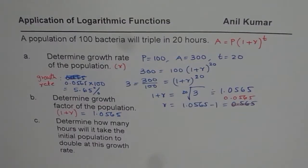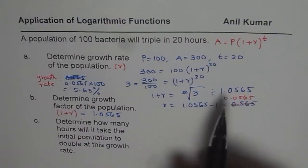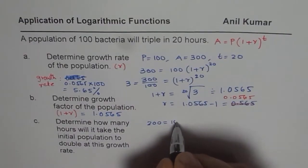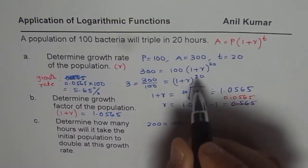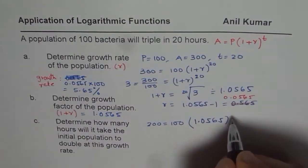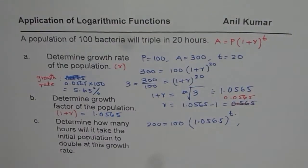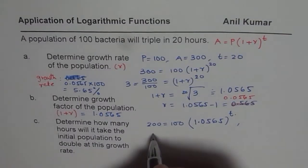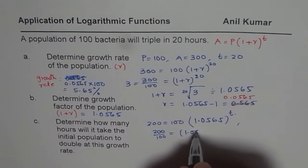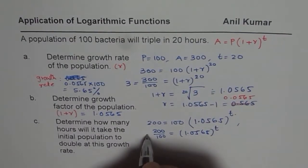Now part C is determine how long or how many hours will it take initial population to double at this growth rate. So double means final will become 200, so we can write this as 200 equals 100. And now we know the value of 1 plus r, so I could write that value as 1.0565 to the power of t. We don't know what this t is, so let us find the doubling time. Now we'll divide 200 by 100, so we get 2 equals 1.0565 to the power of t.